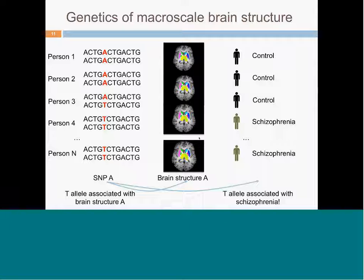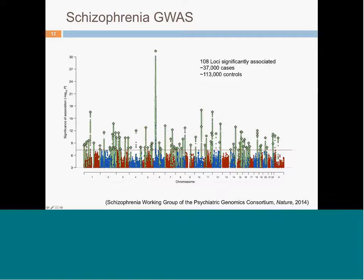To assess genetic correlation, we need large-scale genome-wide association studies — one for SNPs affecting brain structure and one for SNPs affecting risk for schizophrenia. A landmark schizophrenia GWAS published in Nature in 2014 gathered 37,000 cases with schizophrenia and 113,000 controls. Genome-wide association analysis identified 108 loci significantly associated with risk for schizophrenia — a huge boon to psychiatric genetics, providing many genetic variants we can strongly associate with risk for developing the disease.